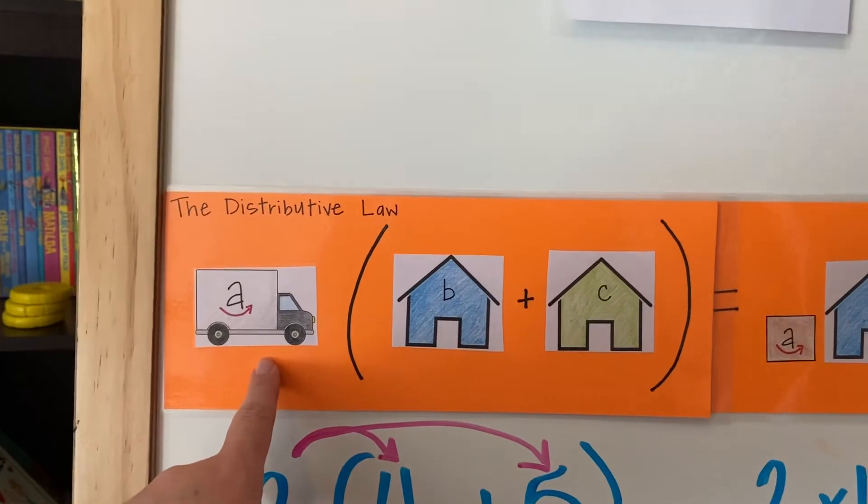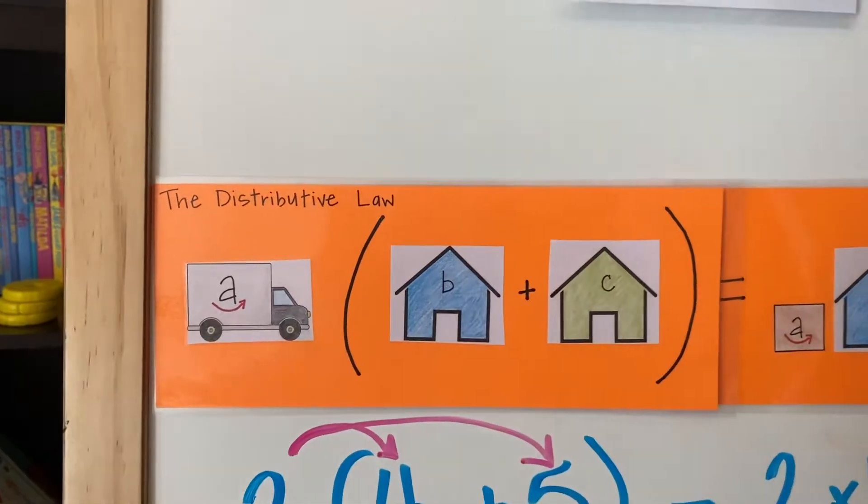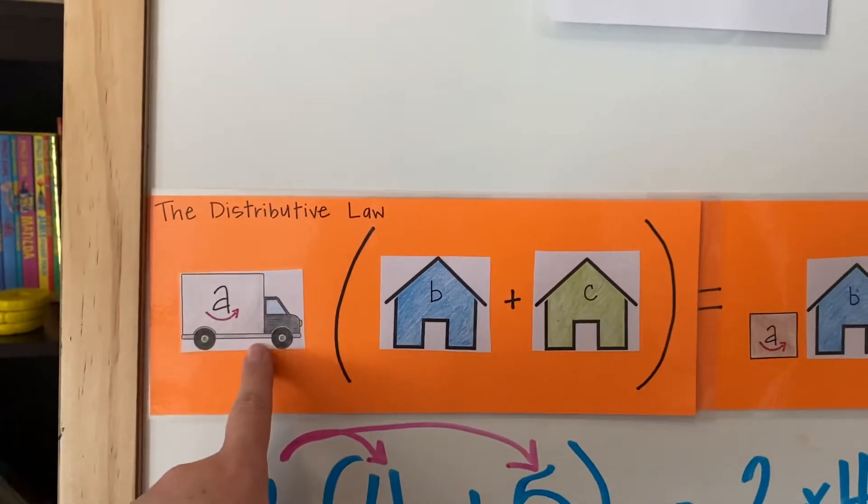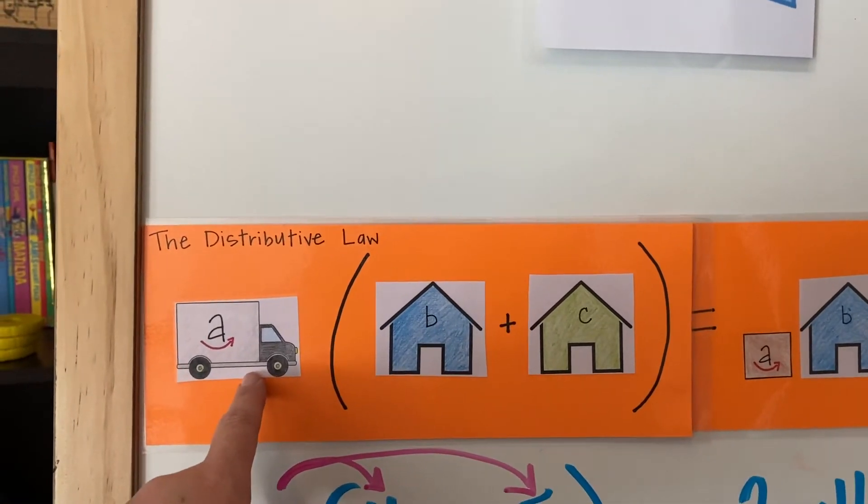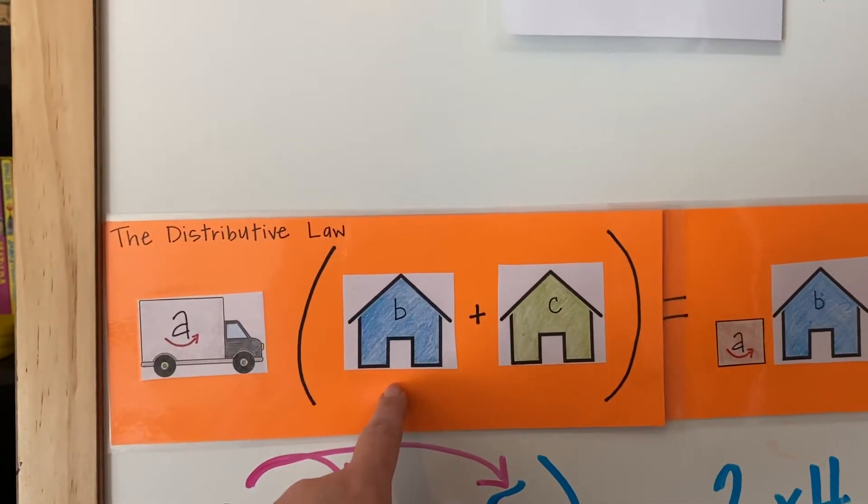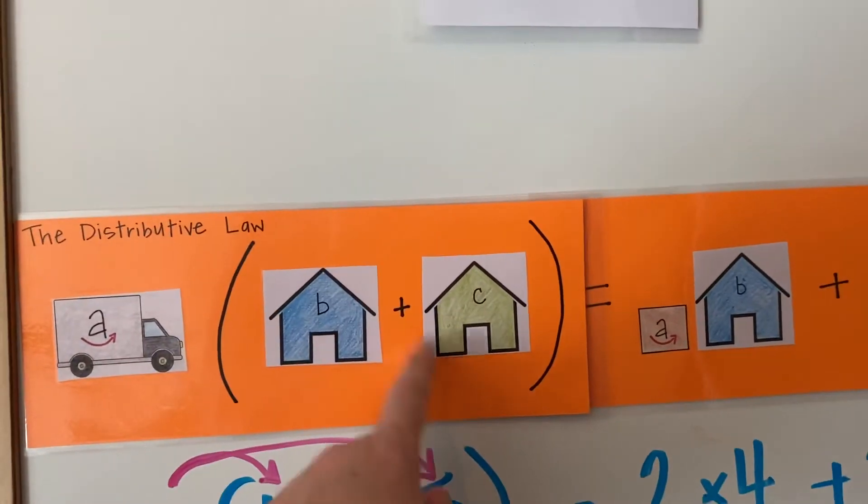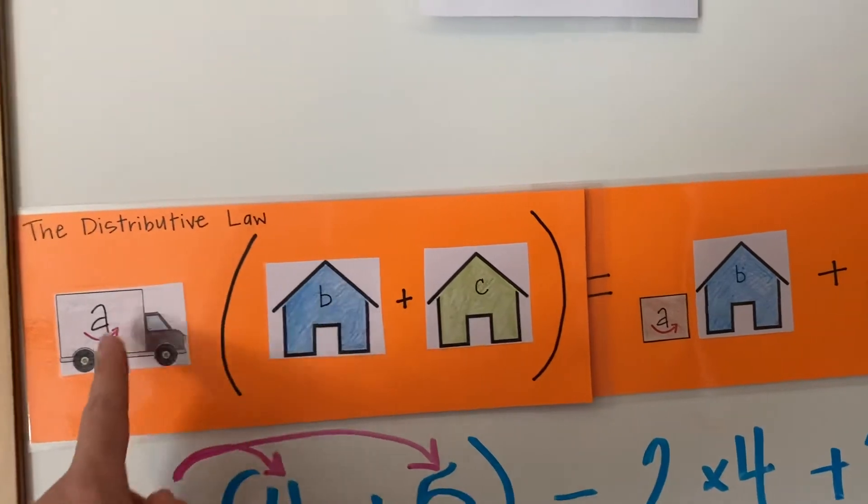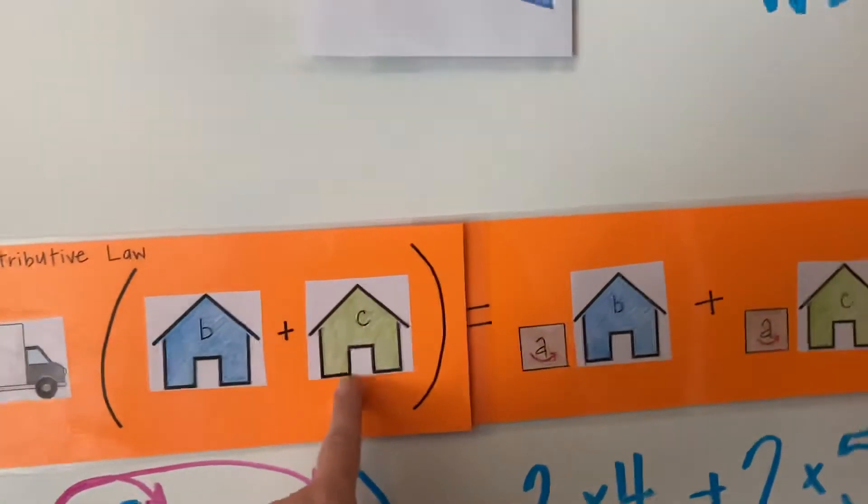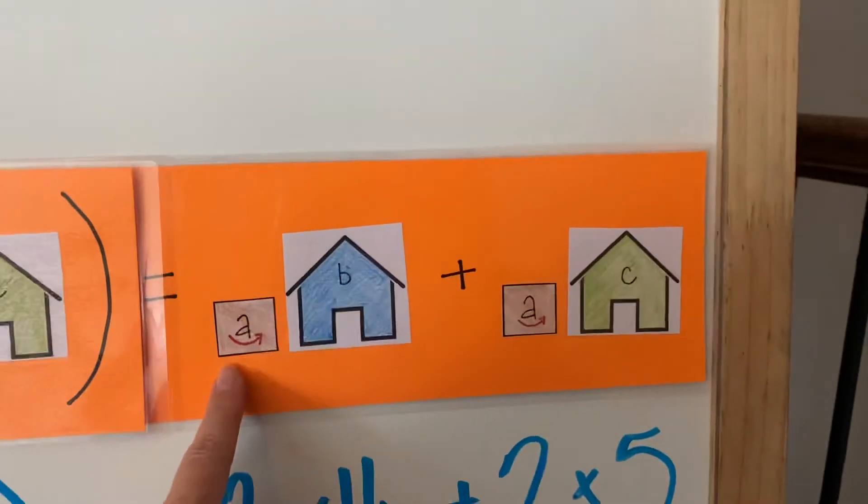These are like the instructions for the Amazon truck for the day. These instructions are telling the Amazon truck to distribute the package to house b and then house c. So a times (b plus c) - look at here - equals a times b plus a times c.